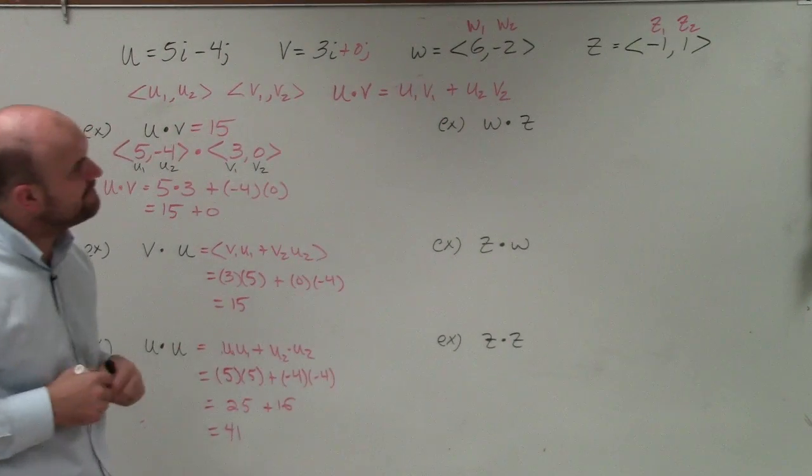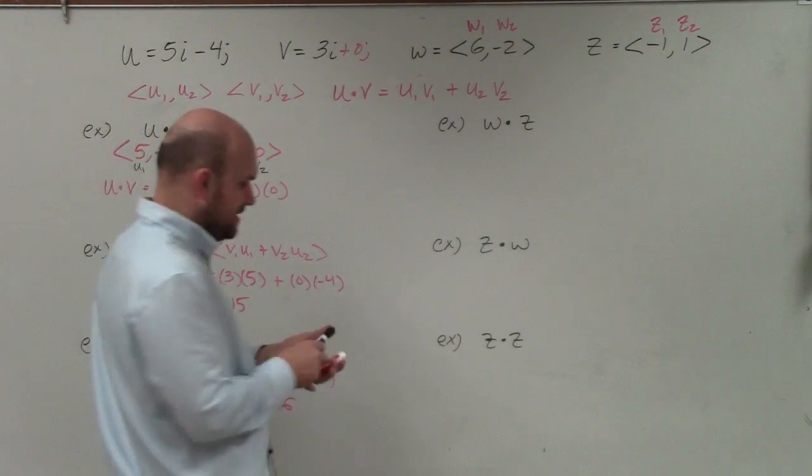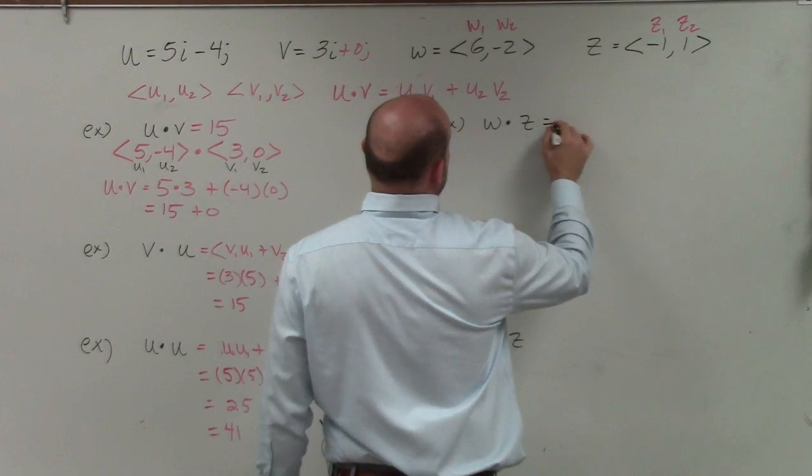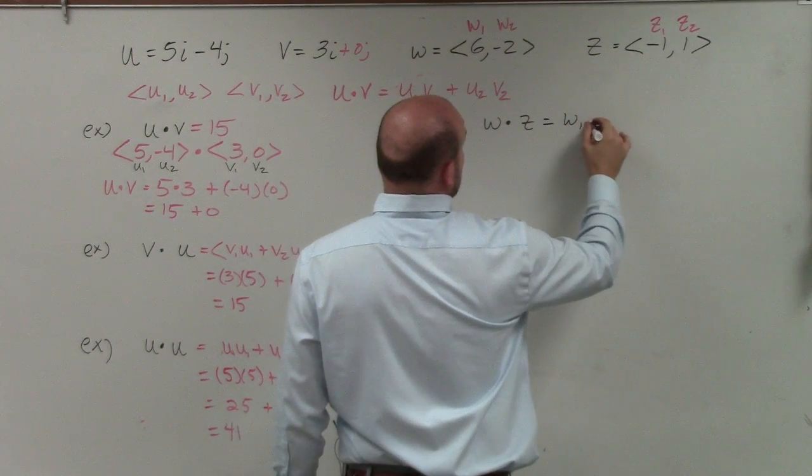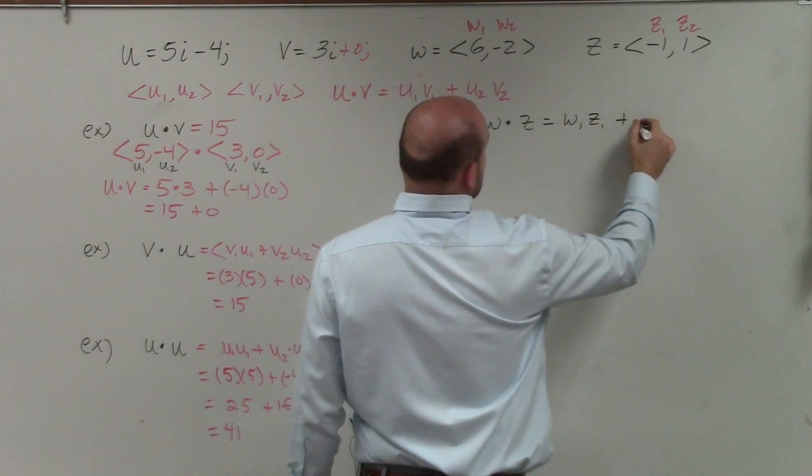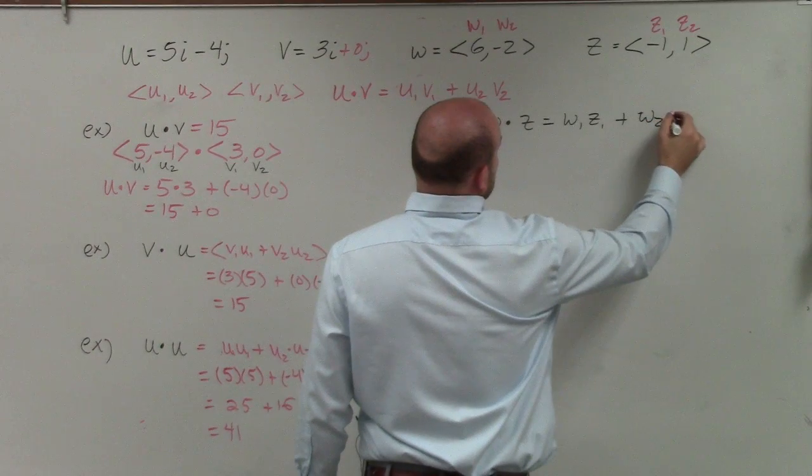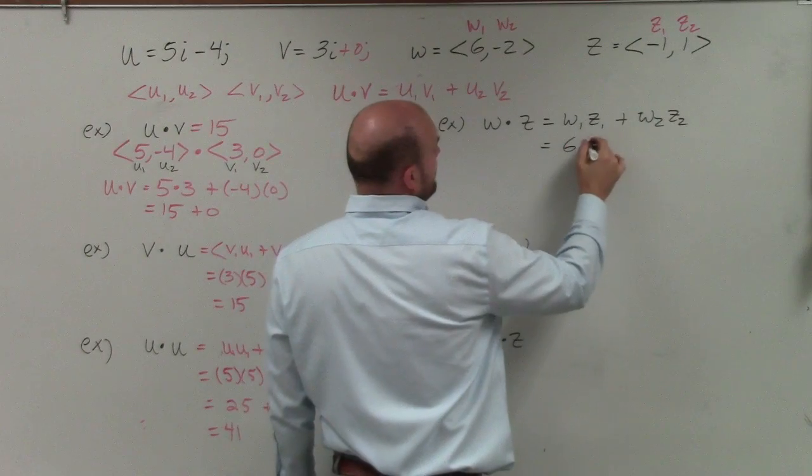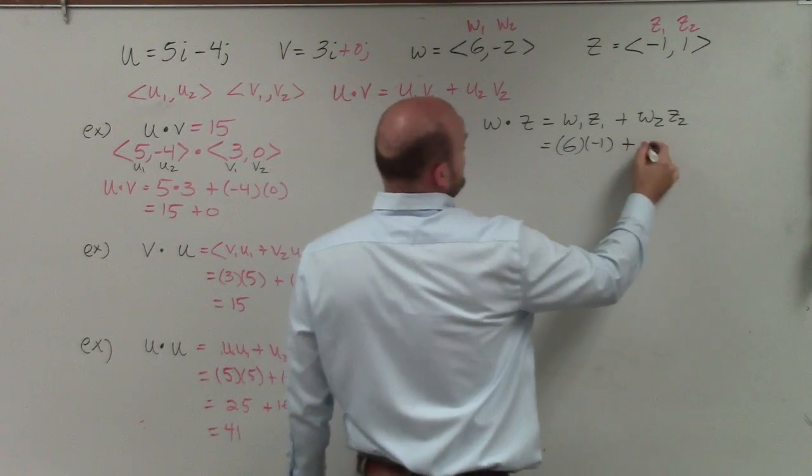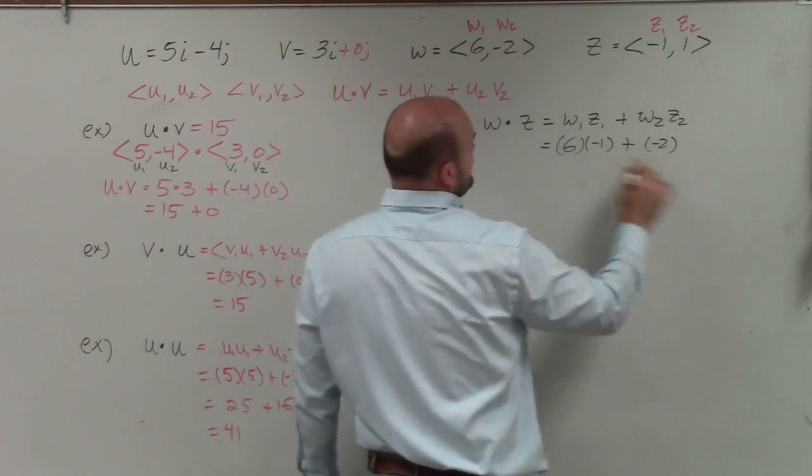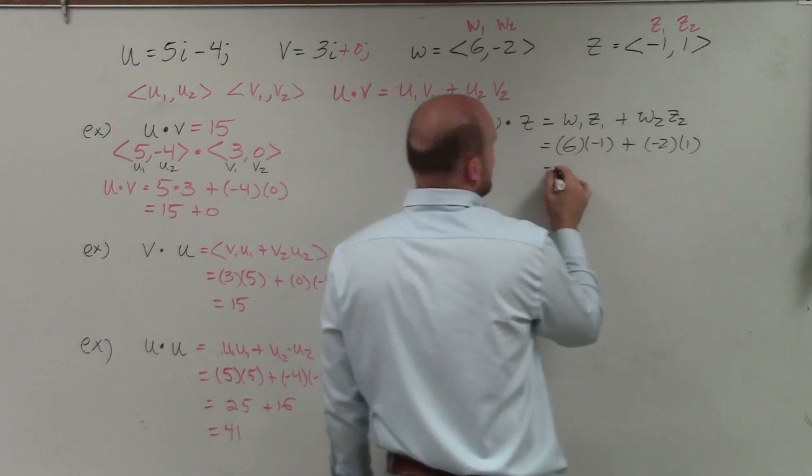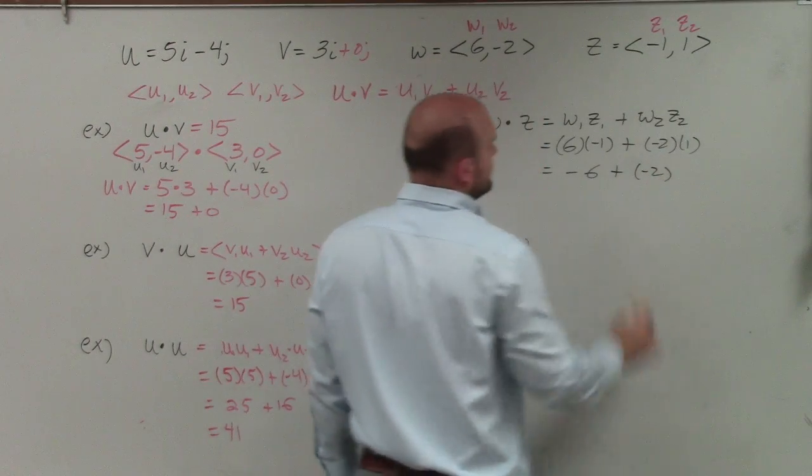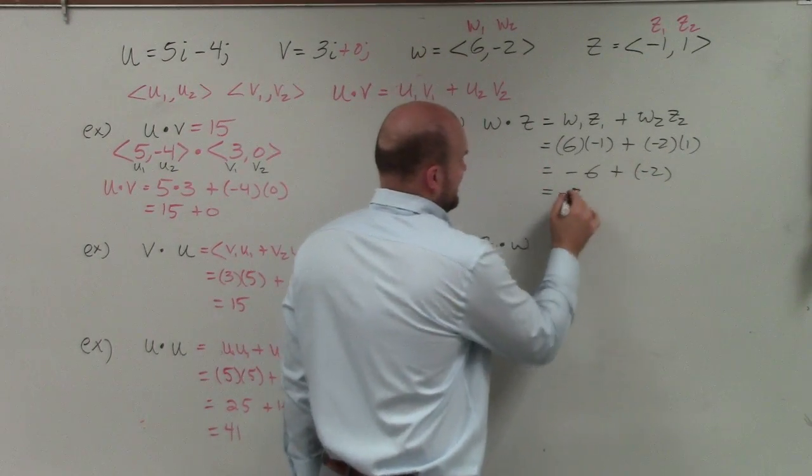So I'm not going to, well, let's write out the first one. So w times z here is going to look something like this. So that's going to be w1 times z1 plus w2 times z2. Well, w1 is 6, z1 is negative 1, plus w2 is negative 2, and z2 is positive 1. So therefore, we have negative 6 plus a negative 2. Well, negative 6 plus negative 2 is equal to negative 8.